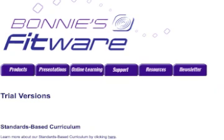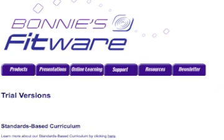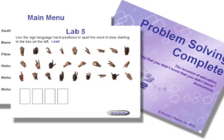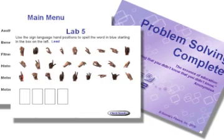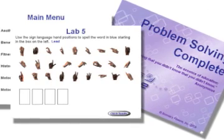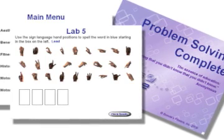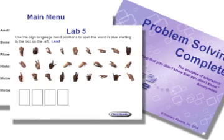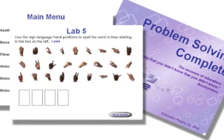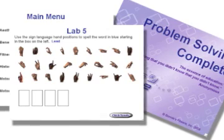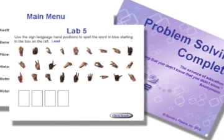The first piece is the actual instructional software. You download the software to your computer, and the three pieces you download are the instructional software, the electronic portfolio, and the electronic quiz. Once they're downloaded to your computer, depending on whether you're using a Macintosh or Windows computer, you may need to unzip the files.